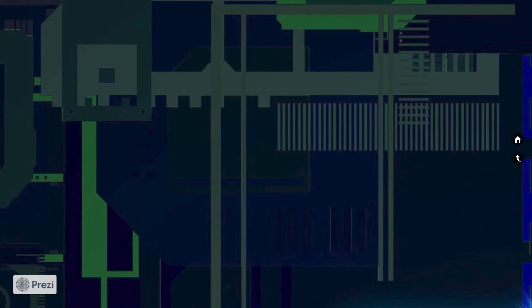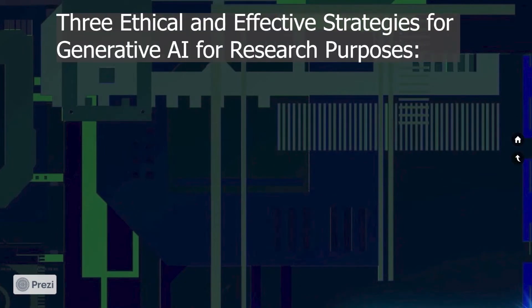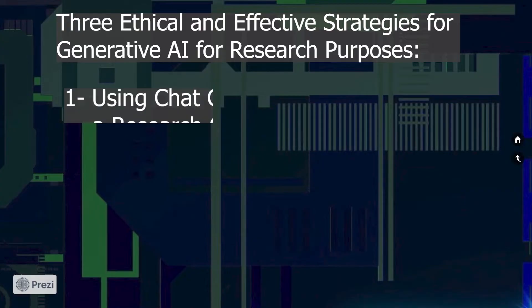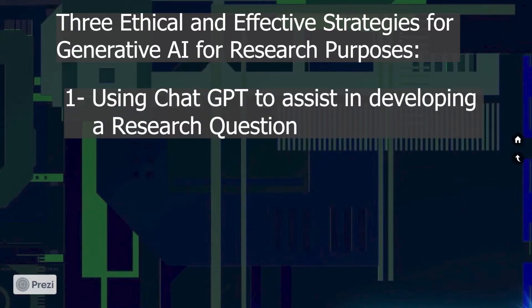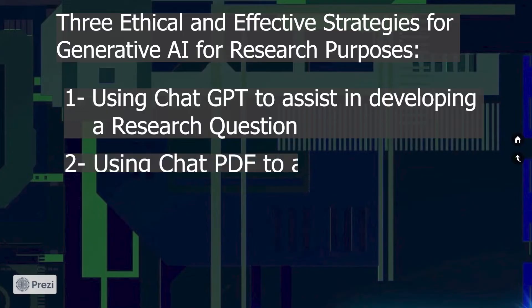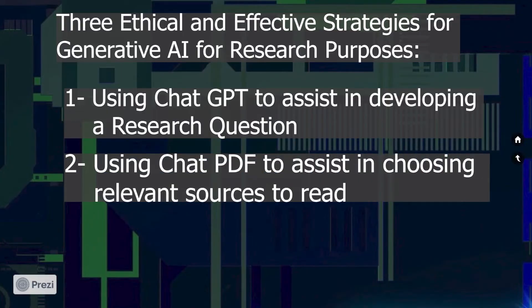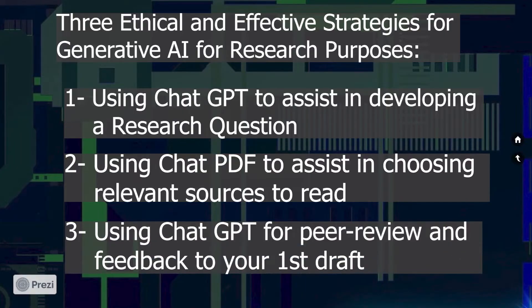We will now introduce three strategies for students in which they may use AI ethically and effectively for research purposes. 1. Using ChatGPT to assist in developing a research question. 2. Using ChatPDF to assist in choosing relevant sources to read. 3. Using ChatGPT for peer review and feedback on your first draft.